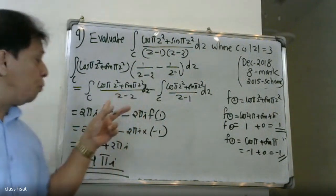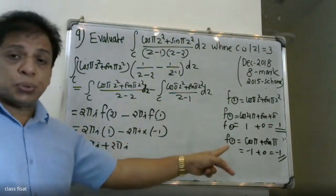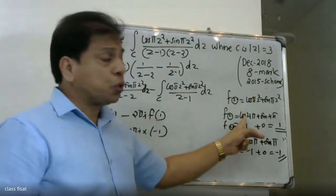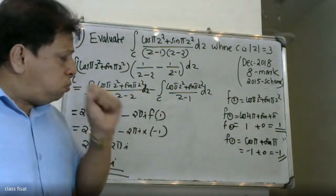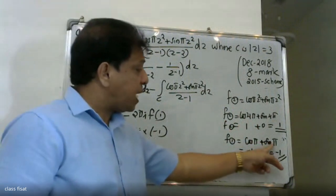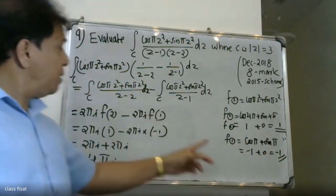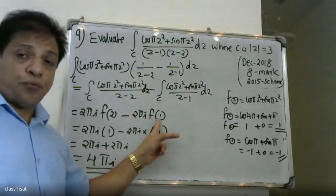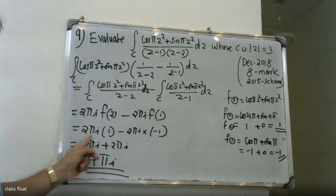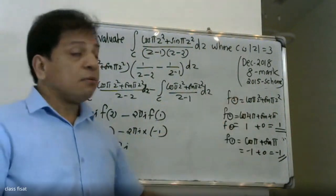Applying the formula: 2πi · f(2) minus 2πi · f(1). Since f(2) = 1 and f(1) = 1, we get 2πi(1) - 2πi(1) = 0. The final result is 0.